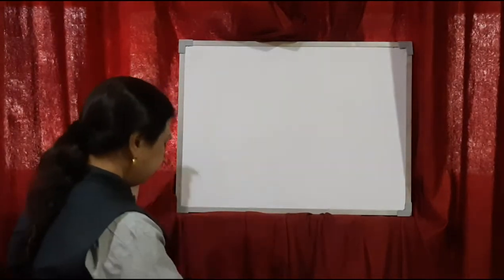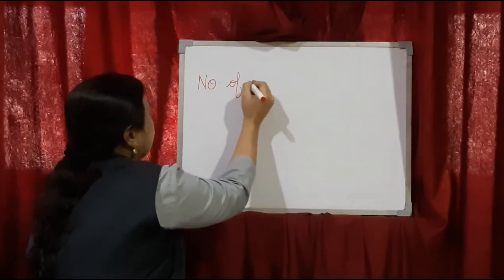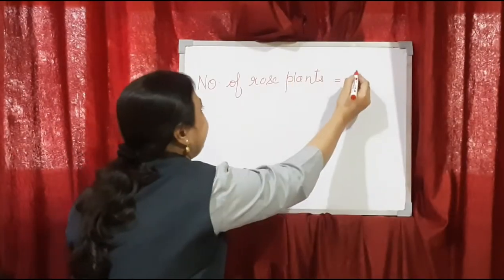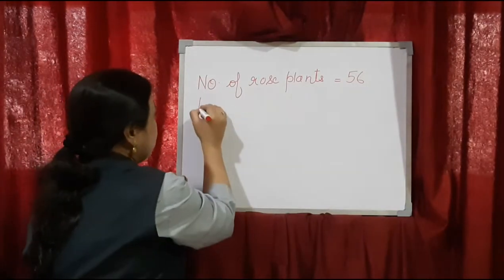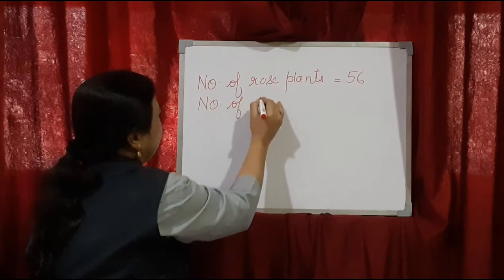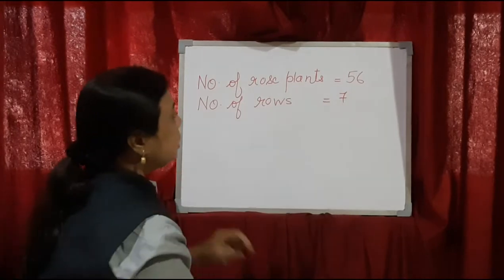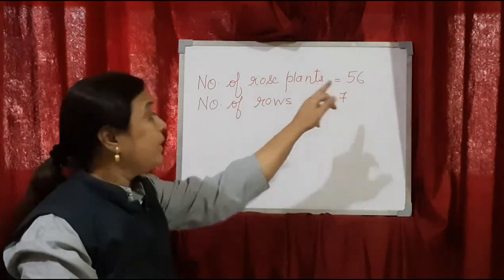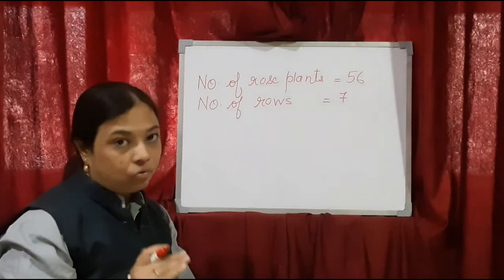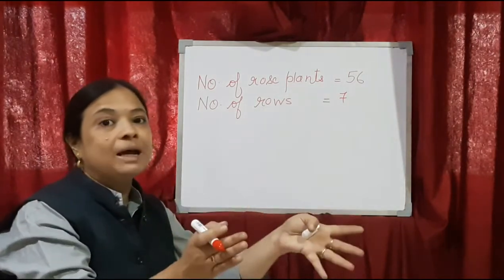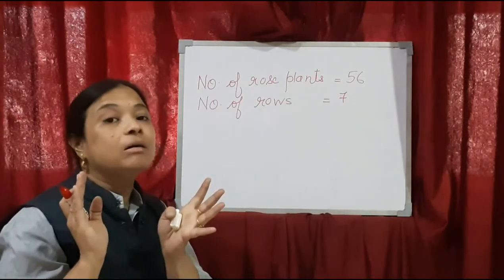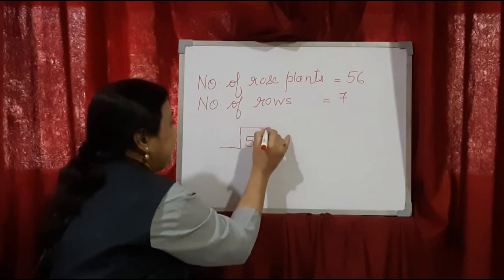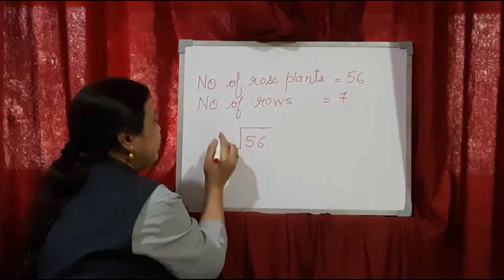So what statement are we going to make here? Number of rose plants — how many are there? 56. And another thing given is number of rows — how many? 7. Total is given here. In multiplication we were finding out the total, but in division the total is given to us. We have to find out how many rose plants are there in one row out of 7 rows. So we are going to divide 56 into 7 rows.